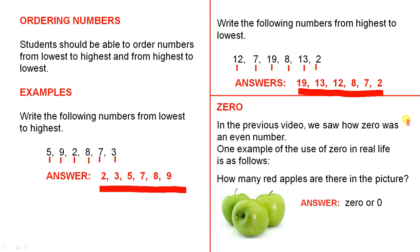In the previous video, we saw how 0 was an even number. One example of the use of 0 in real life is as follows. Now here's an interesting question. How many red apples are there in the picture? Now you can see this picture here and you can see all green apples. So the answer is 0 or zero. So there are no red apples and that's why the answer is 0.